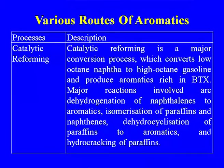The major route for aromatics is the catalytic reforming process — the same process discussed in the petroleum refinery module. Catalytic reforming is a major conversion process which converts low-octane naphtha to high-octane gasoline and produces aromatics in BTX. The major reactions involved are dehydrogenation of naphthenes to aromatics, isomerization of paraffins and naphthenes, dehydrocyclization of paraffins to aromatics, and hydrocracking — which is an undesirable side reaction.